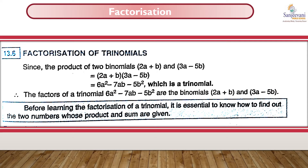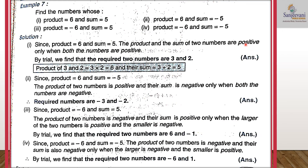Now let us see how to factorize a trinomial. The product of two binomials gives a trinomial. For example, (2a + b)(3a - 5b) = 6a² - 7ab - 5b². So when we factorize a trinomial we get two binomials. First, let us understand how to find two numbers whose product and sum are given. Find the numbers whose product is 6 and sum is 5: by trial and error, 3 and 2, because 3 + 2 = 5 and 3 × 2 = 6.